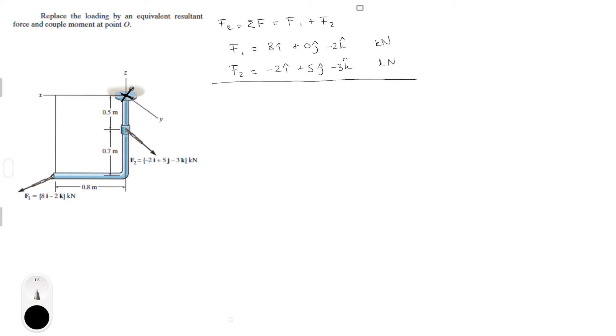Add them together, very simple math. 6i plus 5j minus 5k in kilonewtons. And this is the resultant force.